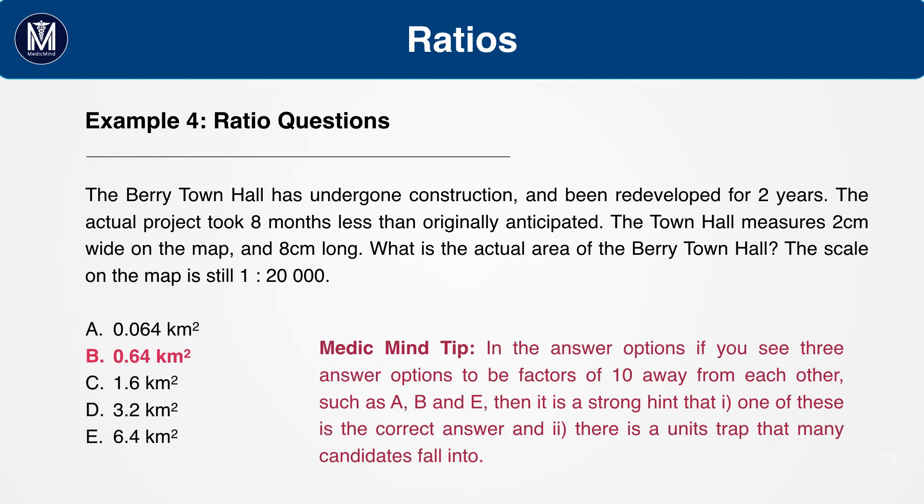Also, as we said before, if answer options have values which are a factor of 10 away from each other, such as a, b and e, then it is a strong hint that firstly, one of these is the correct answer. And secondly, there is a unit trap that many candidates fall into. So be careful to make sure you don't fall into this trap.